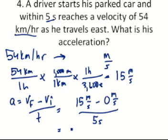Essentially we're taking 15 divided by 5. So we end up with 3 meters per second squared as the final acceleration.